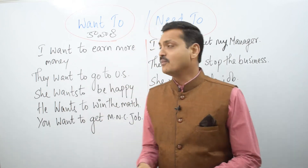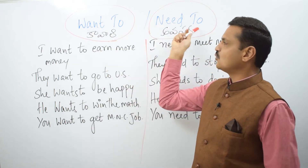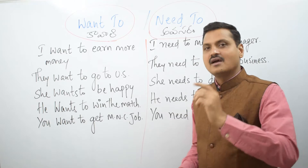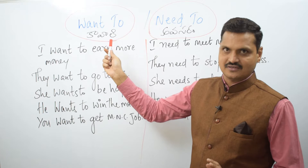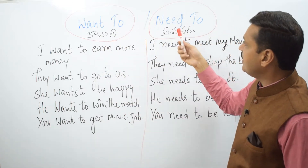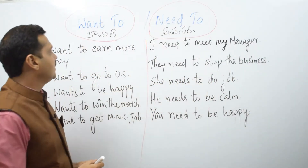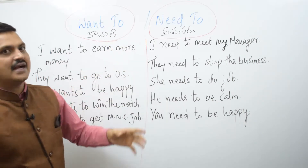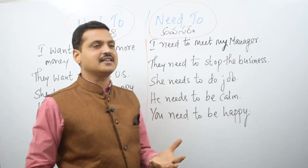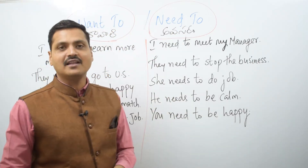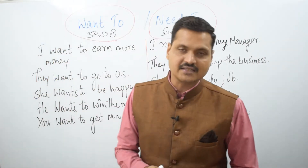Hi friends. Now we will discuss the words 'want to' and 'need to'. 'Want to' means I want money. 'I need' means there is a need for money — I need money. So there is a need for money. If you say these two words, it is a need for money.